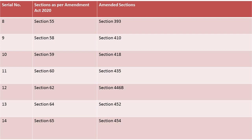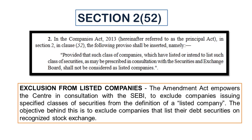Moving further, the amendment sections also cover sections 393, 410, 418, 435, 446B, 452, and 454. The first amendment in section 2 sub-section 52 states that such class of companies which have listed or intend to list specified class of securities as may be prescribed in consultation with SEBI shall not be considered as listed companies. This empowers the central government, in consultation with SEBI, to exclude companies issuing specified securities from the definition of listed companies.